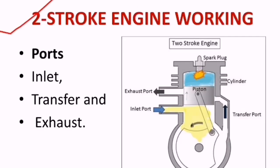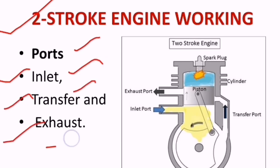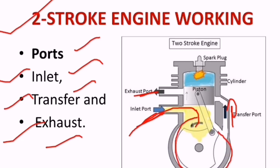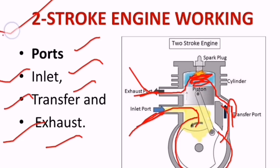Now, what is two-stroke engine working? The difference between two-stroke and four-stroke engines is that in four-stroke engines we have inlet valve and exhaust valve, but in two-stroke engines we have ports — three ports: inlet port, transfer port, and exhaust port. The charge comes from the inlet port, rotates through the crank, passes through the transfer port, and enters the cylinder. It compresses and burns there, and after burning the exhaust gases exit through the exhaust port.